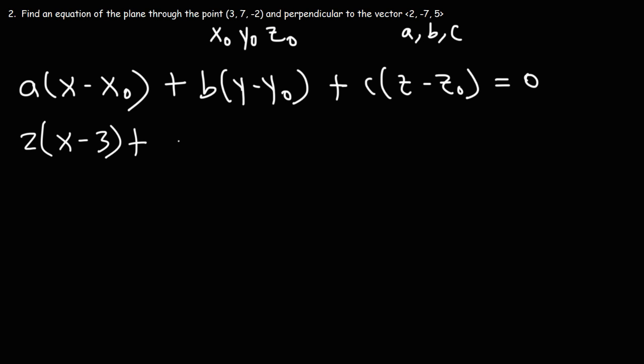B is negative 7, Y0 is 7, C is 5, Z0 is negative 2. So this becomes Z plus 2.